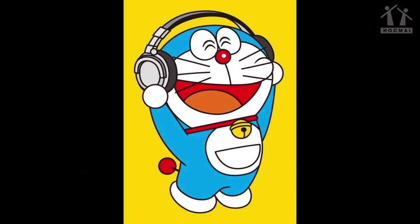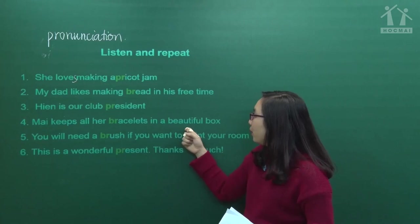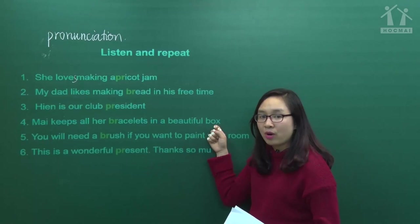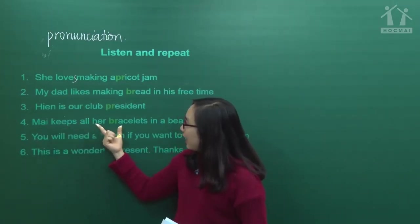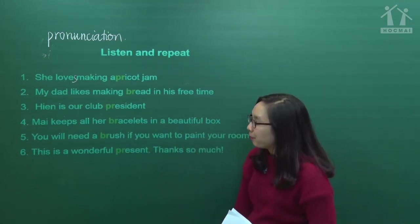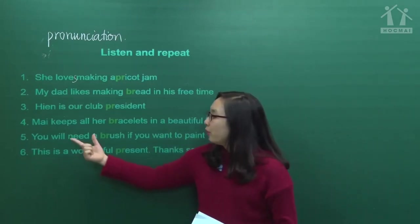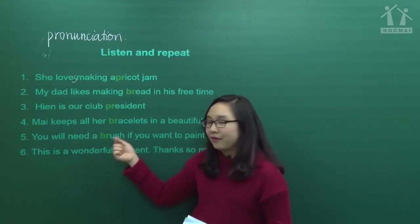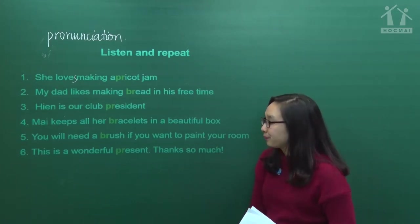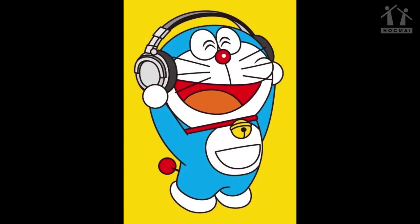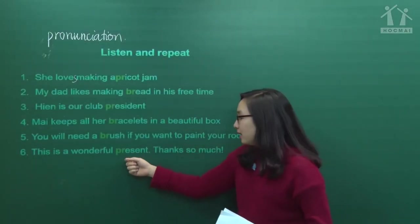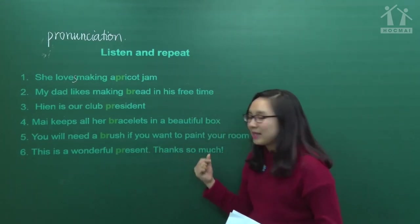Number 4: 'Mai keeps all her bracelets in a beautiful box.' - Bạn Mai giữ tất cả những vòng đeo tay trong một cái hộp rất đẹp. Number 5: 'You will need a brush if you want to paint your room.' - Bạn sẽ cần một cái chổi quét nếu bạn muốn sơn căn phòng. Number 6: 'This is a wonderful present. Thanks so much.' - Đây là một món quà rất tuyệt vời. Cảm ơn rất nhiều.